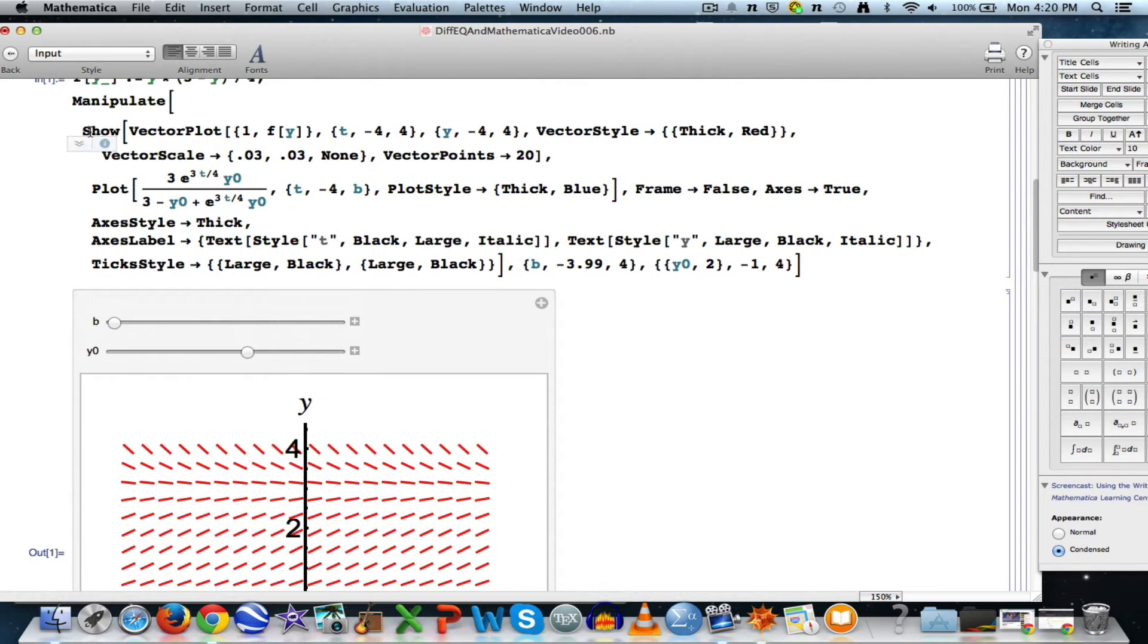So what we've got here is the slope field for that differential equation. It's generated, again, using Show and VectorPlot. Now, Plot generates the graph of the function itself, and we can put those together with Show.